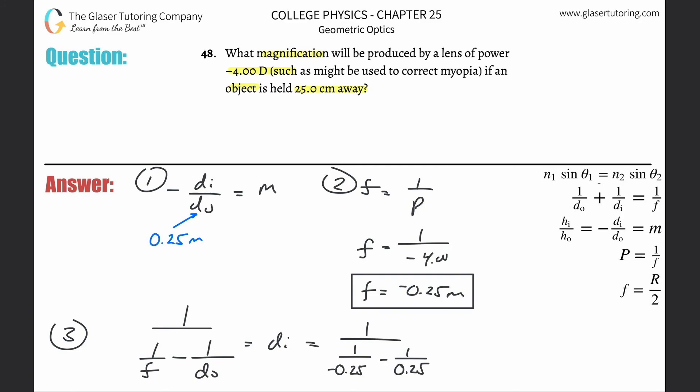Now what do we get when we calculate this? It's one divided by negative 0.25 minus one divided by 0.25, so we get about -8. Then do one divided by that value, and it's negative. So -0.125 meters, and that's again in terms of meters.